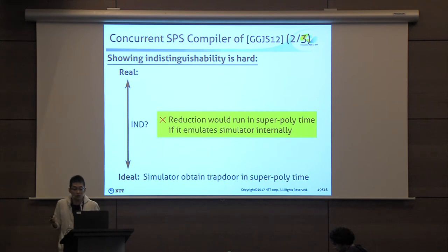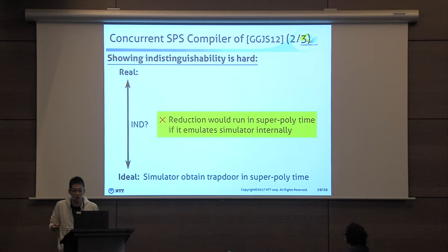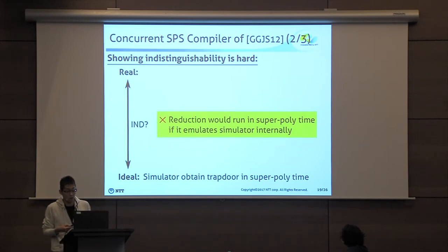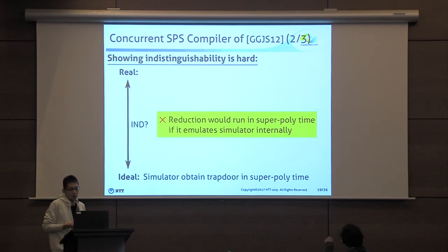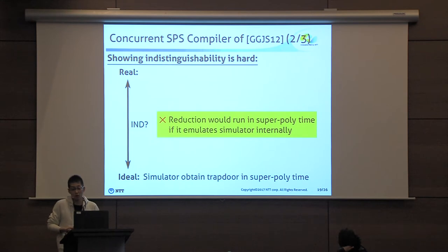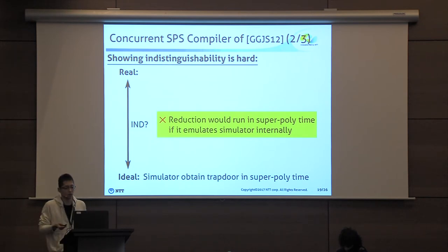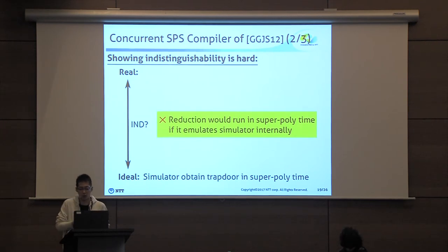Actually, the compiler and the simulator of GGJS are relatively standard and not so difficult. However, what is difficult in GGJS is showing the indistinguishability between the real world and the ideal world. In particular, since we consider super-polynomial time simulation, the simulator runs in super-polynomial time, so if we use a naive reduction that internally emulates the simulator, such a reduction would run in super-polynomial time and we cannot use it to show indistinguishability.